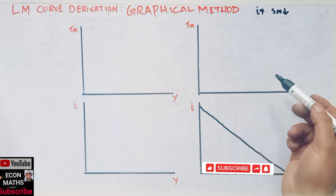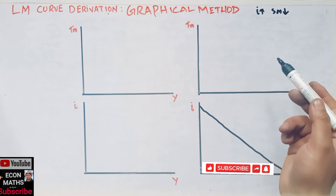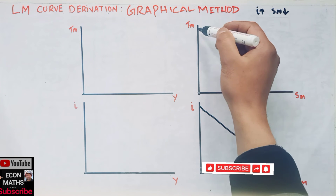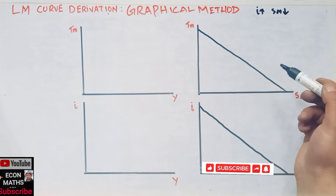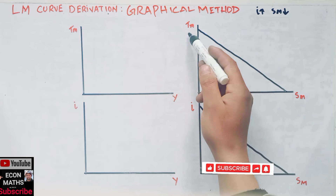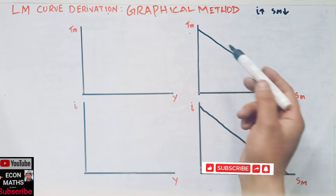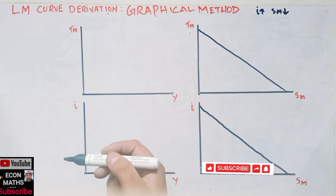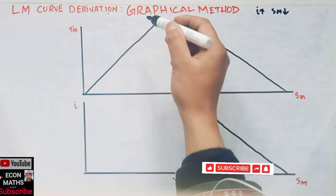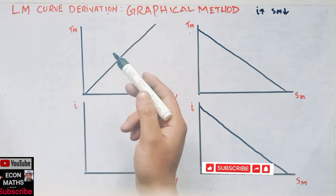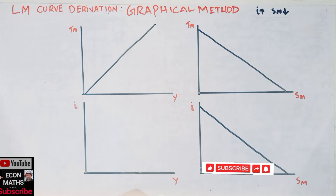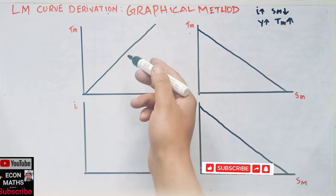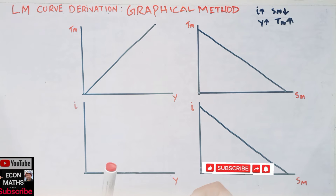In the second graph, it shows us the total money demand and its division between speculative demand for money and transactional demand for money. This is also downward sloping. The sum of these two gives us total money demand. In the third graph, the transactional demand for money is upward sloping because there is a positive relationship between level of income and transactional demand for money — if income increases, transactional demand for money will also increase.